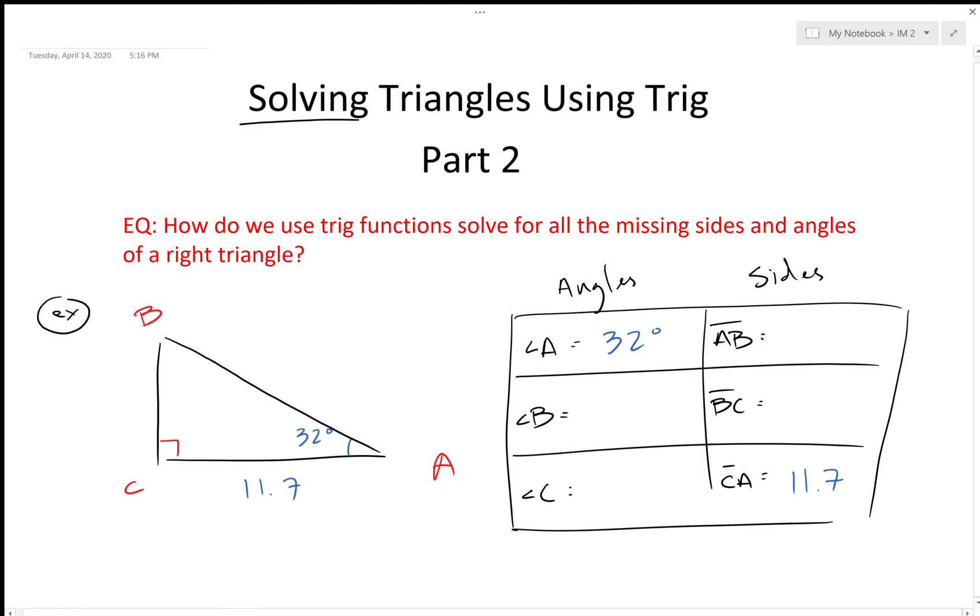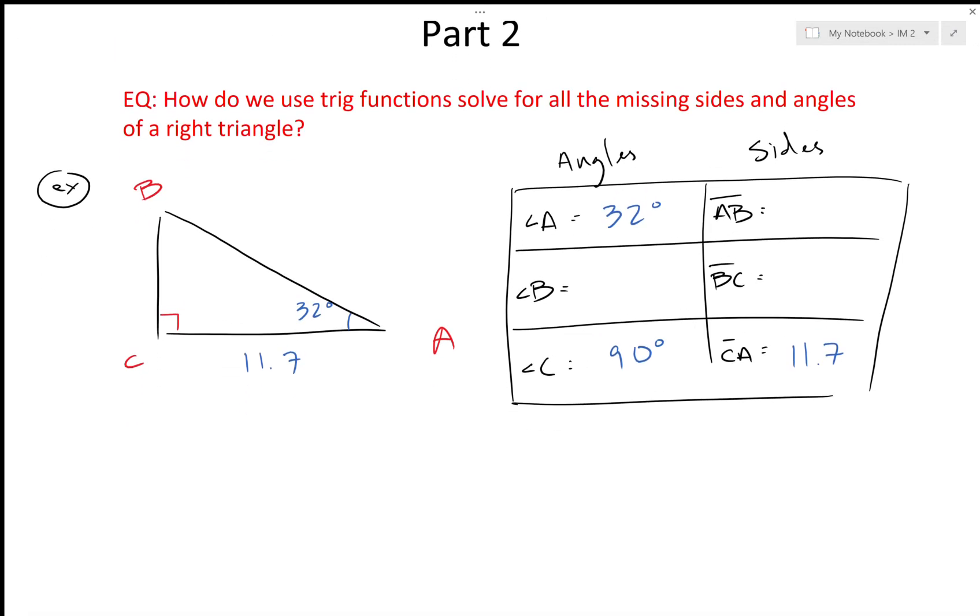32 degrees, that is angle A, and then we have C which is 90 degrees. So for this one I have two angles missing. One of them, so we can use our 180 rule. 32 and 90 add up to—using our calculator, 90 plus 32 gives me 122 degrees.